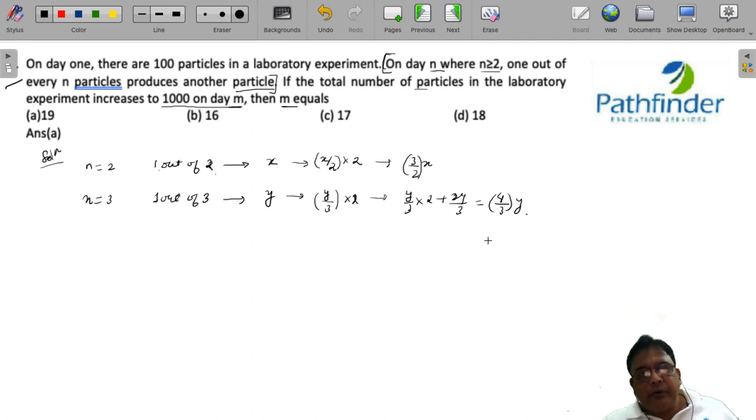So I don't know if you have been able to understand. When n was equal to 2, the number of particles after day 2 is 3 by 2. When n is equal to 3, that is on the third day, the number of particles is equal to 4 by 3 of the previous day.